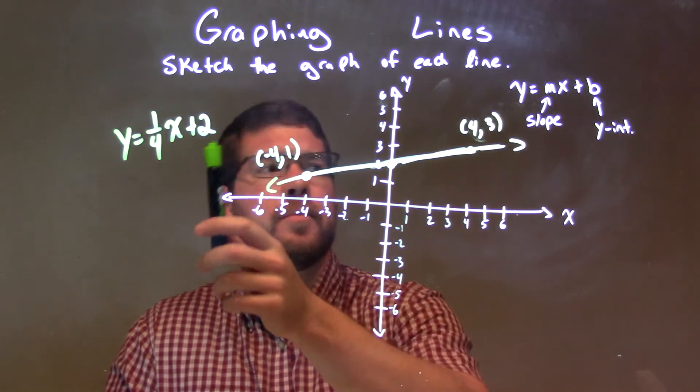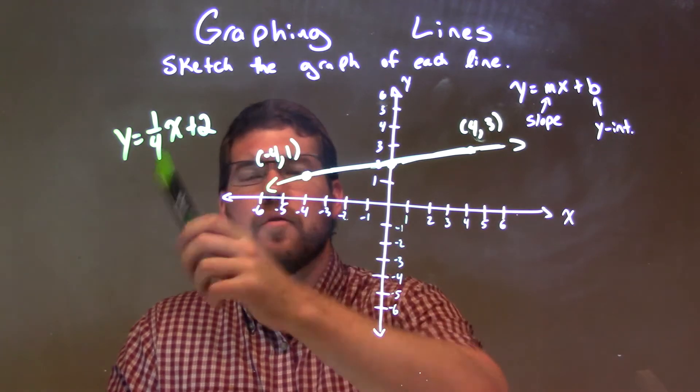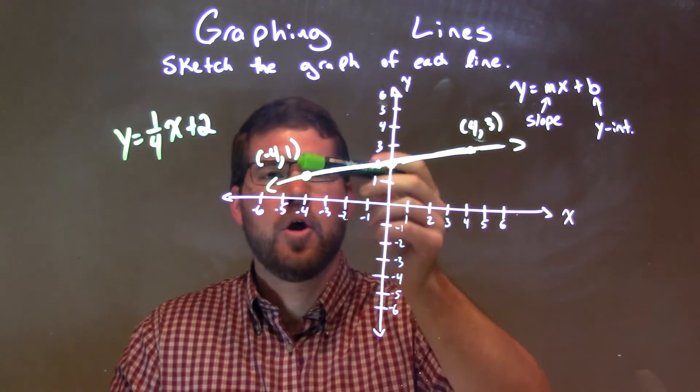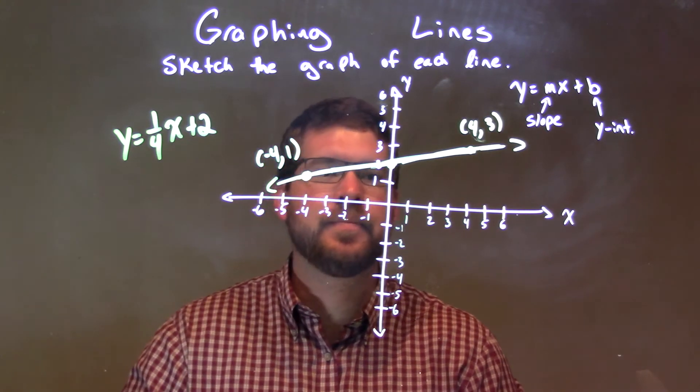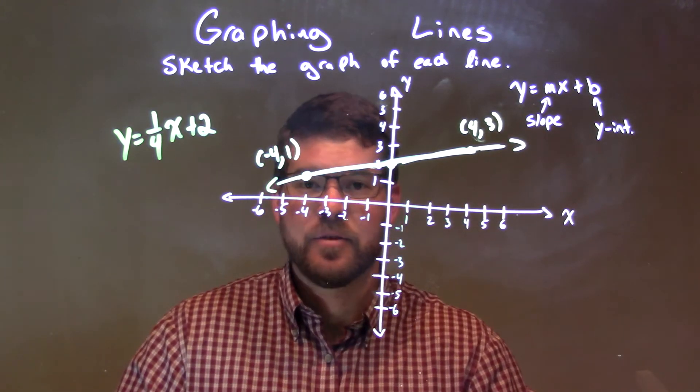Quick recap here. The y-intercept is 2. That's where it crosses, that's our b-value. It crosses the y-axis. 1 fourth is our slope. Up 1 unit over 4, or down 1 unit to the left 4. And then we basically combine those two to make our final answer.